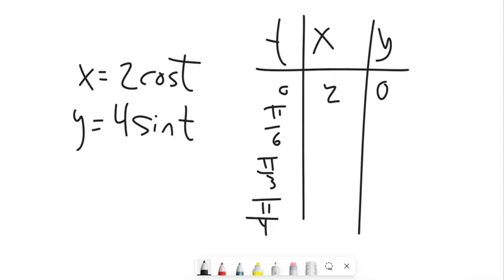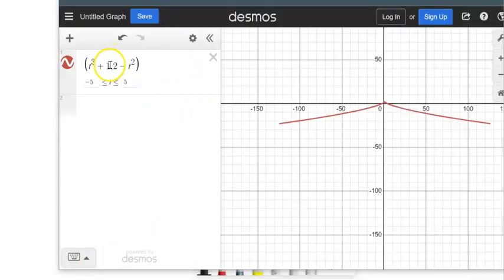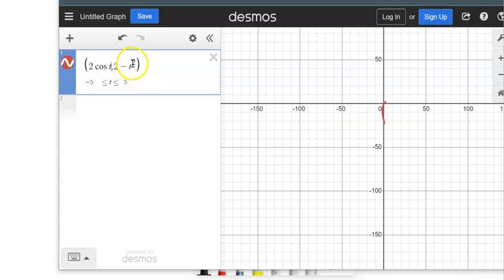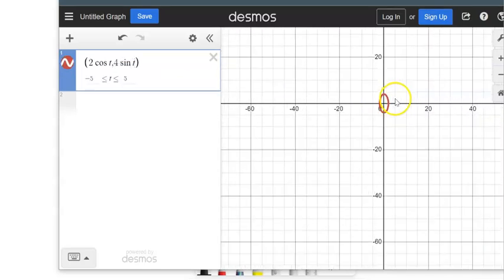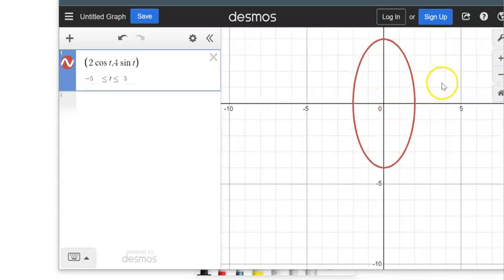And just so you get a sense of what this is going to look like, again, I'm going to use Desmos a little bit here. 2 cosine t by 4 sine t. And here's what that graph would look like.